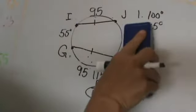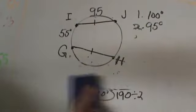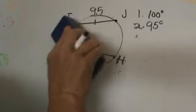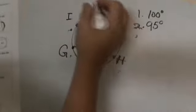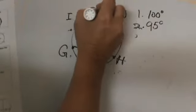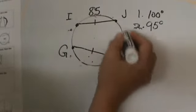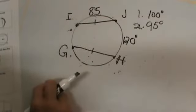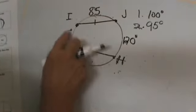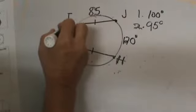So let's look at the last scenario. Let's erase all this information from this one. Same diagram. Now we're going to say IJ is 85. HJ is 120. And you've got to figure out GI. So this is our unknown.